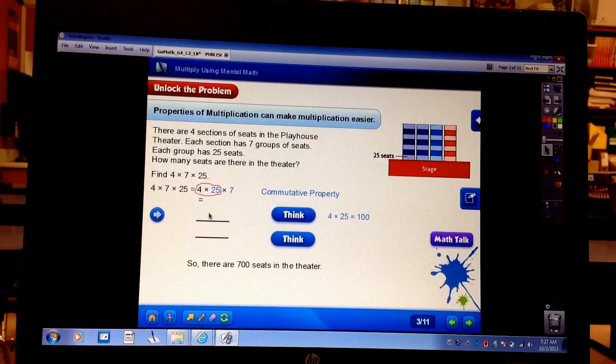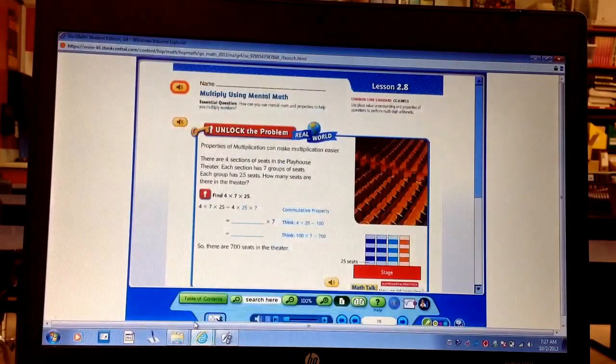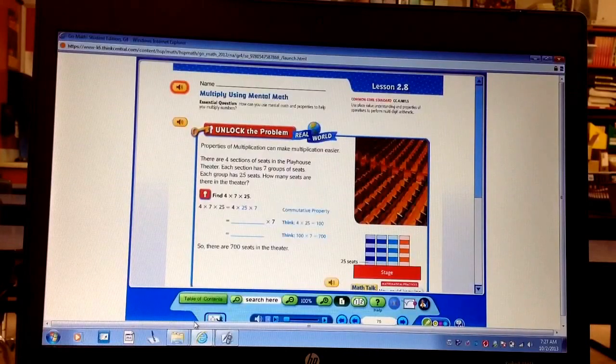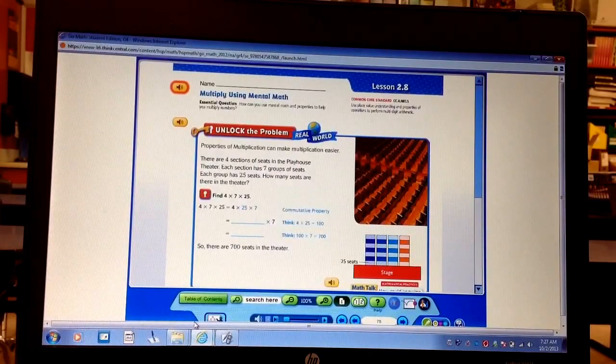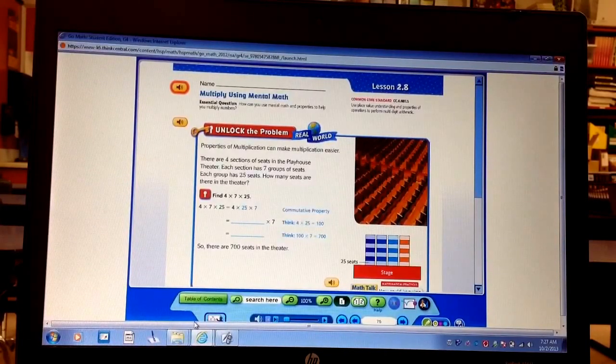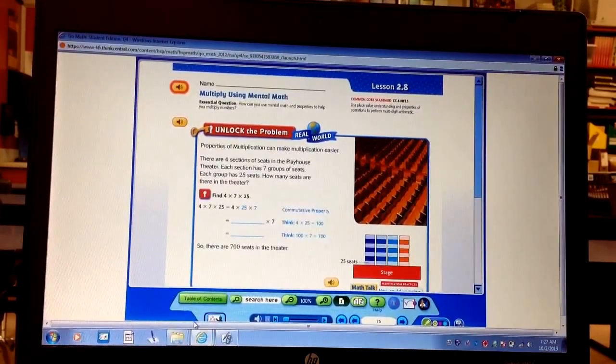Okay, today we're dealing with 2.8. The page on your screen should look like this. Okay, properties of multiplication. Multiplying using mental math. The most important thing you need to remember when we're using mental math is you're trying to find the easiest way to multiply using what you already know. So you should be pulling out a lot of prior knowledge, stuff you already know.